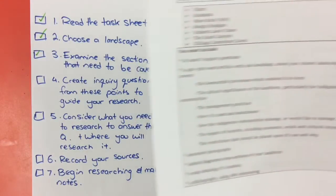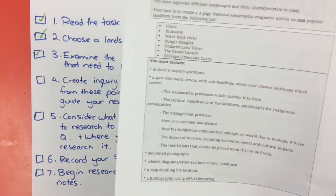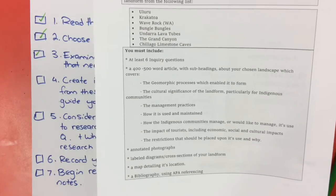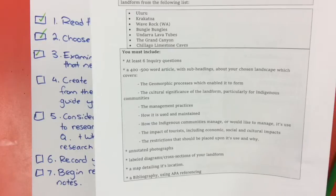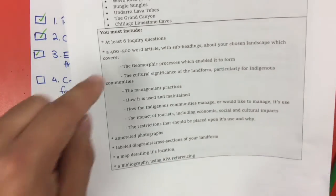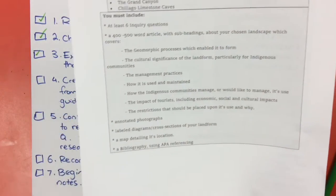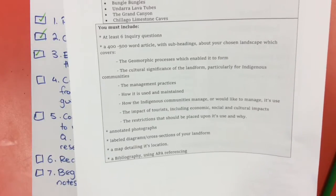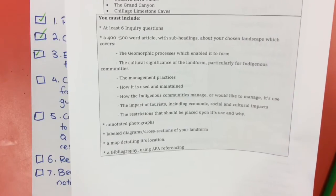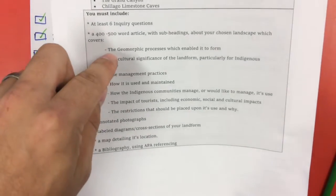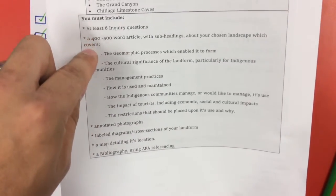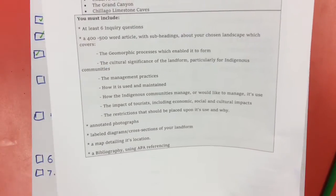So we need to choose one of these landscapes. Like I said, if there's one you're interested in, come and see me and I'm sure I'll be happy to let you do that one. Examine the sections that need to be covered - that's these points here. What I don't want you to do is just create subsections or subheadings in your article that state these points. This is what you have to talk about within your article.